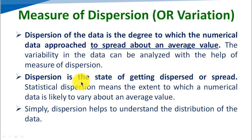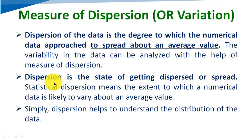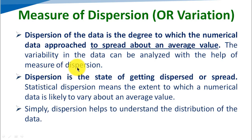Dispersion is the state of getting dispersed or spread. To understand the dispersion, we have to use different terminology or different categories of measure of dispersion — that means different types of measure of dispersion are there.